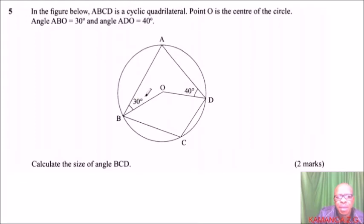Angle ABO is 30. We have that. And, angle ADO is 40. We have that. Calculate the size of angle BCD. This is the angle that we are required to calculate. So, how are you going to get that angle? We can do that to utilize the fact here that if we draw a line here, we will be able to get this angle, this angle here, and this angle.